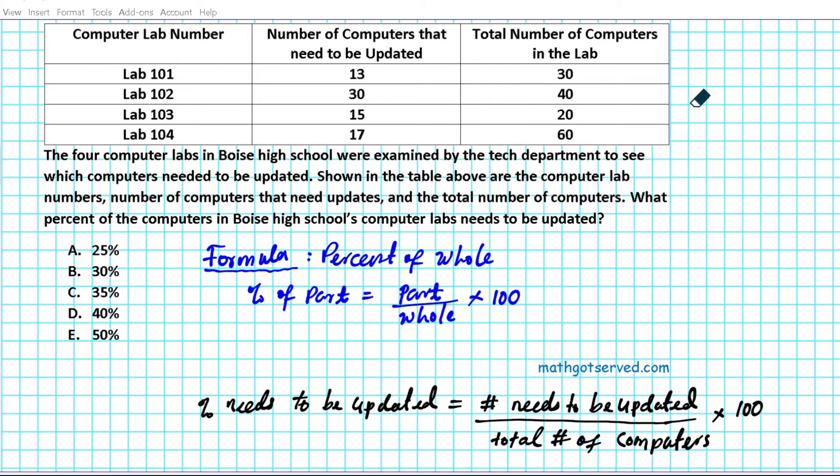To find the number that needs to be updated, all we do is find the sum of these numbers in the middle column right here. So it's going to be 13 plus 30 plus 15 plus 17. Seven plus three is 10 plus five, that's 15. Five, carry one. One, two, two plus three is five, five plus two is seven. So the number of computers that needs to be updated is 75.